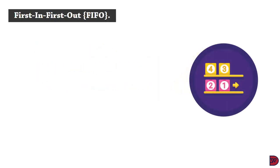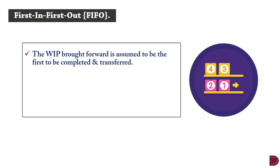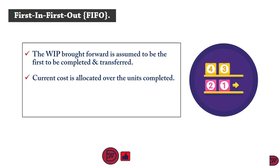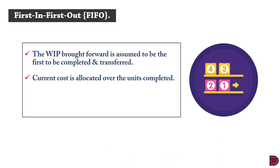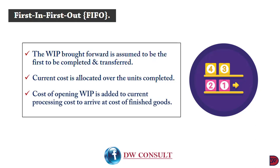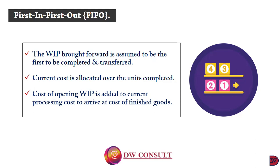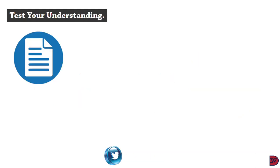For first in first out, it is assumed that the business will first work on the work in progress that has come into the business before it commences to produce others. The current cost is allocated over the units completed, meaning the cost incurred in the current period will be spread over the total units completed. Then the cost of opening work in progress is added to the current processing cost to arrive at the cost of finished goods.